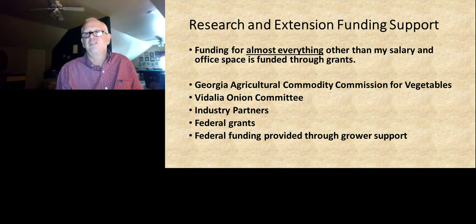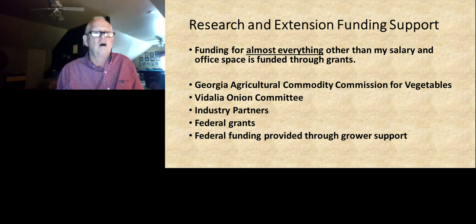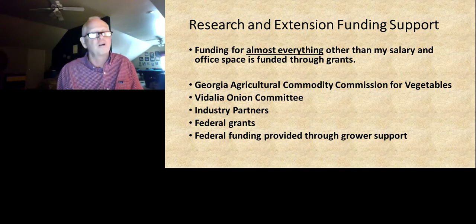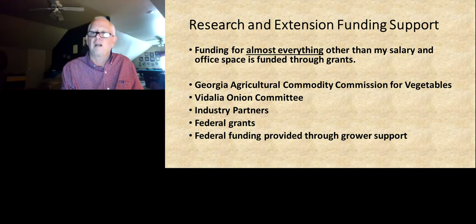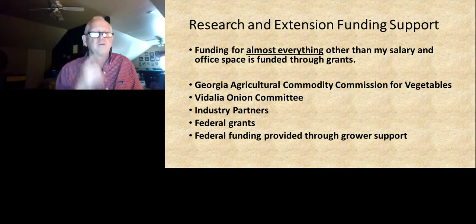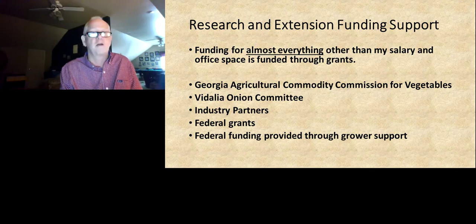Research and extension activities: one of the things we always try to emphasize is that we really can't do this without funding. The University of Georgia provides my salary and a place to work, but most of the actual work we conduct is supported by outside funds. We want to recognize particularly the Georgia Agricultural Commodity Commission for Vegetables and the Vidalia Onion Committee, our industry partners, and federal grants supported through grower support.